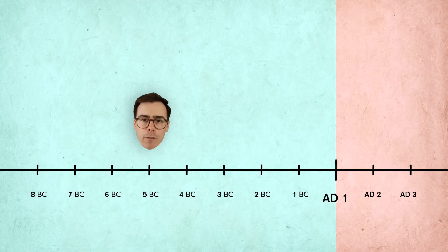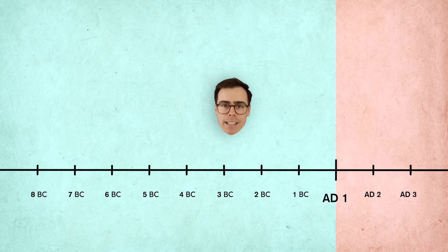Something important to know about BC is that the dates count down instead of up, just like negative numbers. So if you lived in 5 BC, the next year would be 4 BC, and the next year would be 3 BC, and so on.